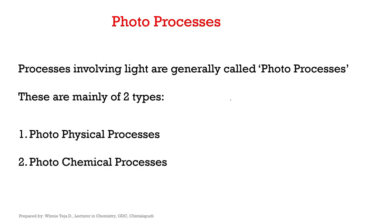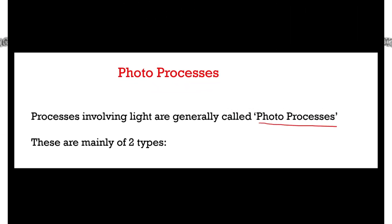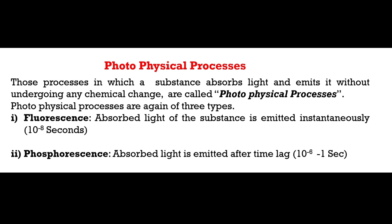Coming to photoprocesses: the processes that involve light are generally called photoprocesses. There are two types of photoprocess — photophysical process and photochemical process. As the name indicates, there will be only a physical change in a photophysical process.